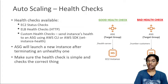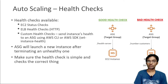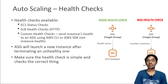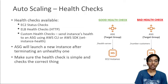Health checks are extremely important - your ASG depends on them to function correctly. You have different health checks available: the first is the EC2 status checks, which we have seen before. The second is the elastic load balancer health check, if you have an ELB in front of your ASG - this is HTTP-protocol based. If an instance is deemed unhealthy because of a bad EC2 status check or a bad ELB health check, your Auto Scaling Group will launch a new instance after terminating the unhealthy one.